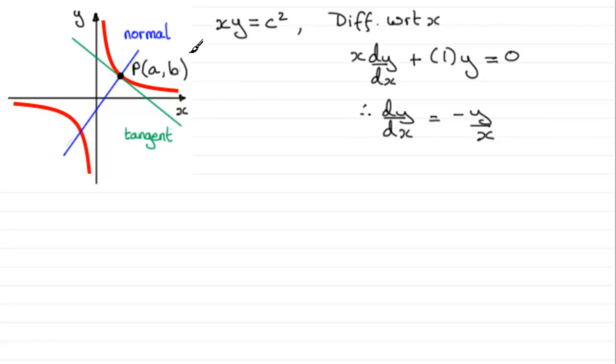So at this general point here, we can say that when X equals A and Y equals B, that the gradient at the point P is given by dy by dx which equals minus B over A.